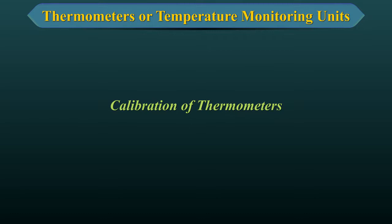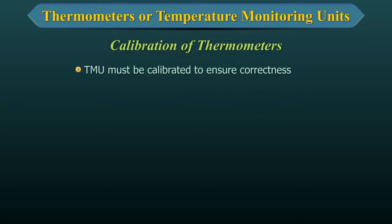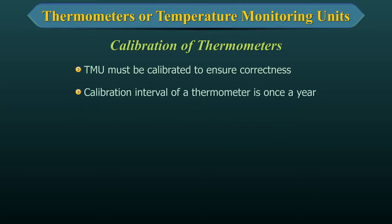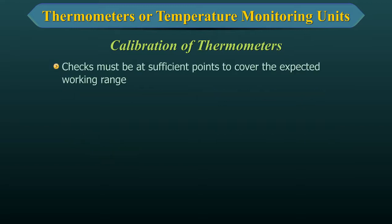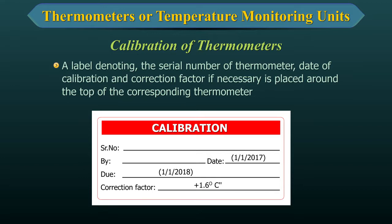Calibration of Thermometers. The TMU must be calibrated to ensure correctness. The calibration interval of a thermometer is once a year. The thermometer must be checked against a calibrated reference, and the checks must be at sufficient points to cover the expected working range. A label denoting the serial number of the thermometer, date of calibration, and correction factor if necessary is placed around the top of the corresponding thermometer.